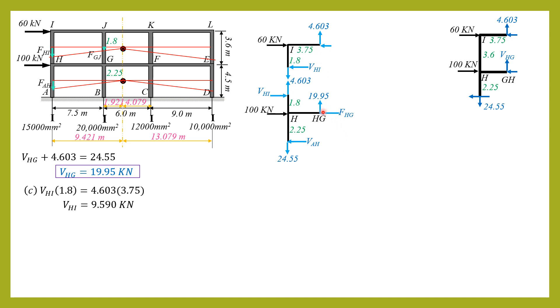So if we sum up moment about this point then we can solve vh. So summation moment about hg equals zero. By the way this is 19.95, it is 24.55 minus 4.603. So vh times 2.25 plus vhi which is 9.59 times 1.8, then plus 4.603 likewise times 3.75, then equals 24.55 times 3.75. So that's the only equation. So vh is equal to 25.573 kilonewtons.